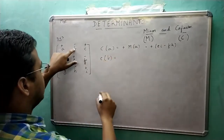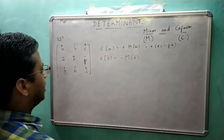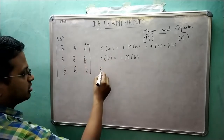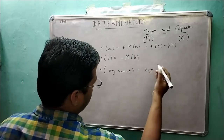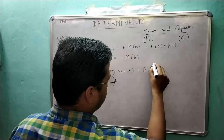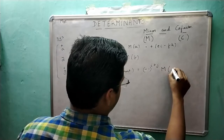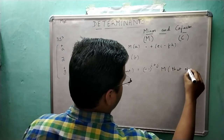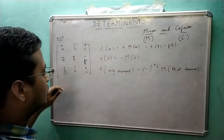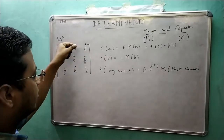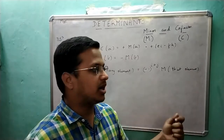The co-factor of B will be its sign times the minor of B, which we already calculated. In general, the co-factor of any element is (−1)^(i+j) × the minor of that element, where i and j denote the position of the element. Proceeding this way, you get the co-factors of all elements, and placing them in a matrix — replacing A with co-factor of A, B with co-factor of B, and so on — gives the co-factor matrix of the given matrix.